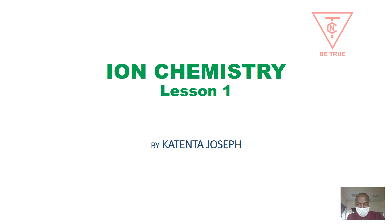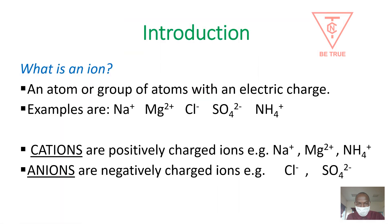Hello everyone, welcome to Ion Chemistry, Lesson One. My name is Joseph. Let's introduce by asking yourself what an ion is. It is an atom or a group of atoms with an electric charge. Examples are the sodium ion, magnesium ion, chloride ion, sulfate ion, ammonium ion, and many others.